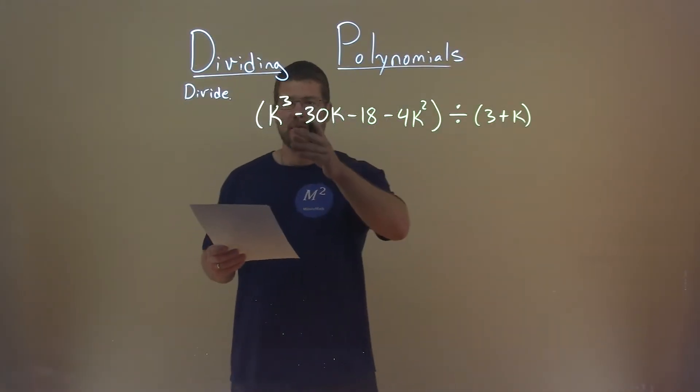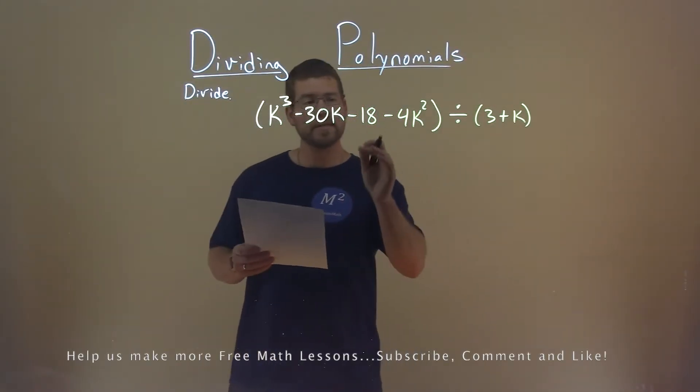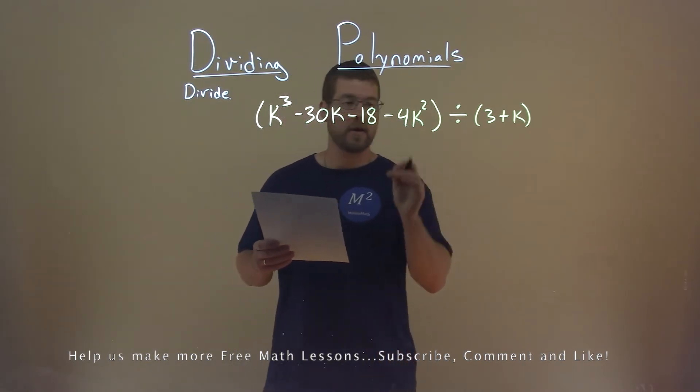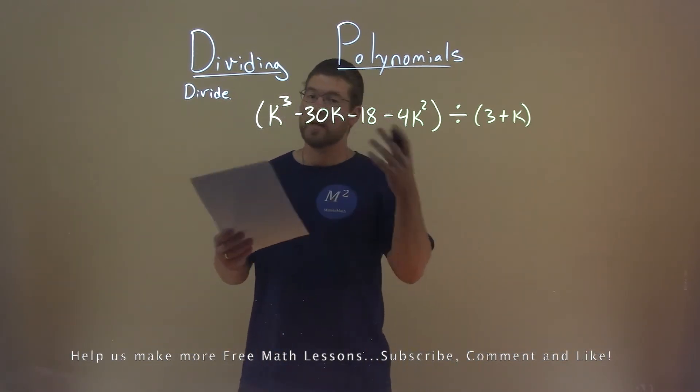We're given this problem right here: k to the third minus 30k minus 18 minus 4k squared divided by 3 plus k, and we need to divide this.